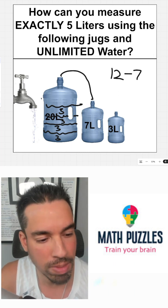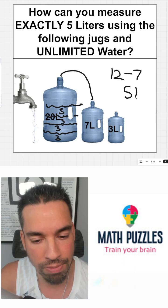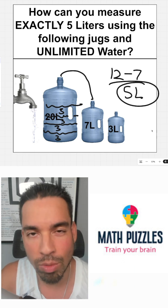And then once I have the seven liters in here, what I'm going to have left in the big jug is five liters on the dot. That's how you do it. Done.